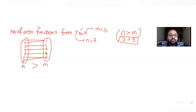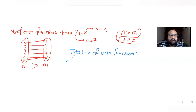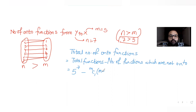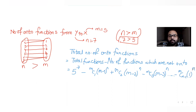The formula for total number of onto functions is: (total functions) minus (functions that are not onto), using inclusion-exclusion: m^n − mC1·(m−1)^n + mC2·(m−2)^n − mC3·(m−3)^n + ... + (−1)^(m−1)·mC(m−1)·1^n.